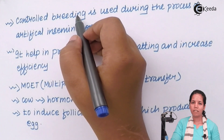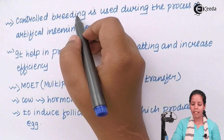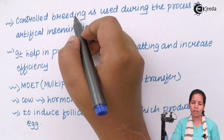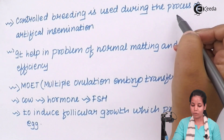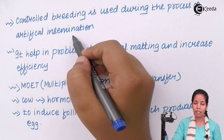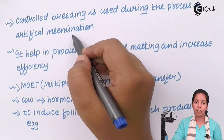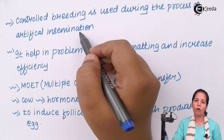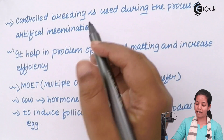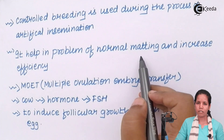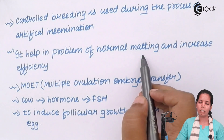In inter-specific hybridization, controlled breeding with only certain desirable characteristics is done. For this, artificial insemination is used, which means that reproductive sperm from the male is collected and put into the ovary of the female reproductive tract. This improves the efficiency of the normal mating process.